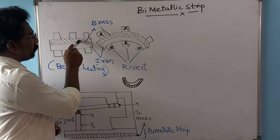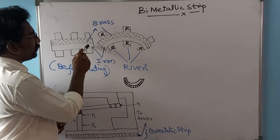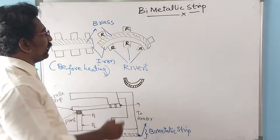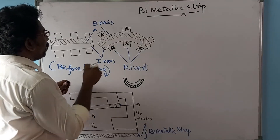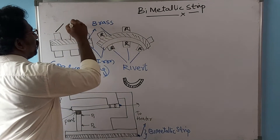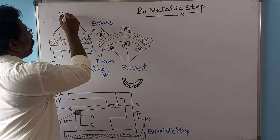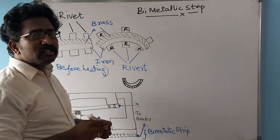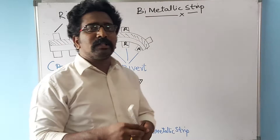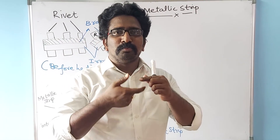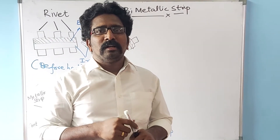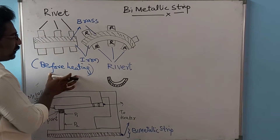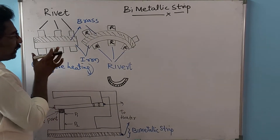Now consider this is our bimetallic strip — the top part is brass material and the bottom part is iron material. The connectors you find here are called rivets. A rivet is a joint which is used to connect both the materials, brass and iron. This is a bimetallic strip before heating.